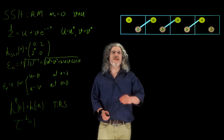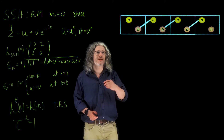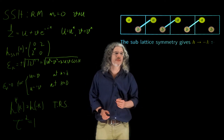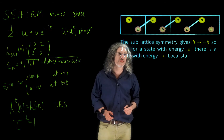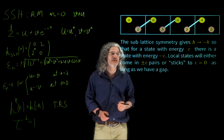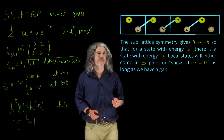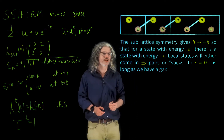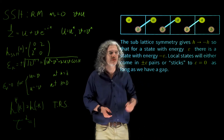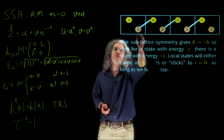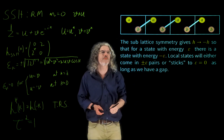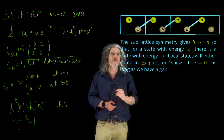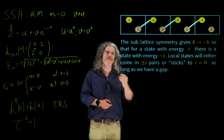What I want to show now is that the absence or presence of this end mode is related to a winding number that changes only when the gap is closed. Using the sub-lattice symmetry, H goes to minus H, so for a state with energy epsilon there is always a state with energy minus epsilon. In this situation, when we have a local state at A, this state must stick to zero as long as we have a gap, or states come in pairs with energies plus and minus.